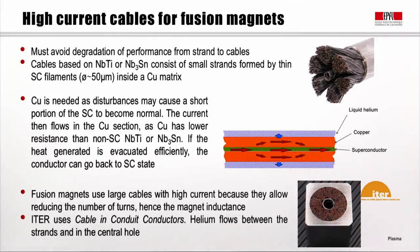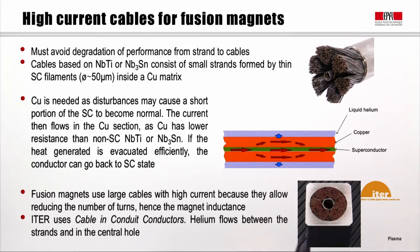In practice, fusion magnets always use very large cables carrying large currents — not just large current densities — because this allows reducing the number of turns and hence the magnetic inductance. ITER, for example, uses a concept called cable-in-conduit conductor, in which helium flows both in the voids between strands and in a central hole in the conductor. The conduit around, made of stainless steel, is there for mechanical stability.